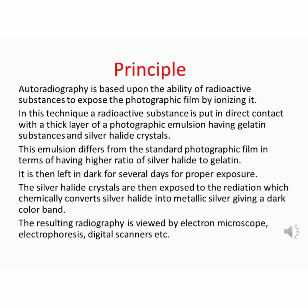Principle: Autoradiography is based upon the ability of radioactive substances to expose the photographic film by ionizing it. In this technique, a radioactive substance is put in direct contact with a thick layer of a photographic emulsion having gelatin substances and silver halide crystals. This emulsion differs from the standard photographic film in terms of having a higher ratio of silver halide to gelatin. It is then left in dark for several days for proper exposure. The silver halide crystals are then exposed to the radiation, which chemically converts silver halide into metallic silver, giving a dark color band.